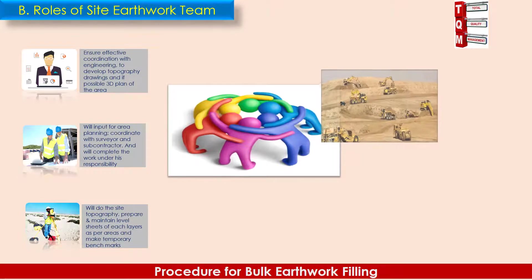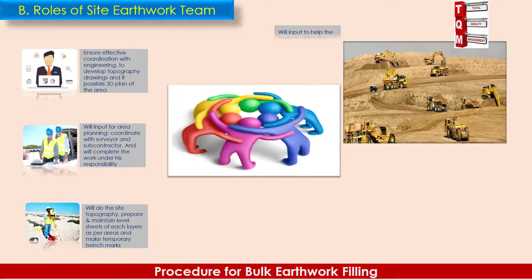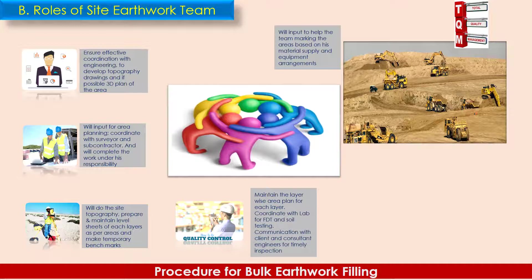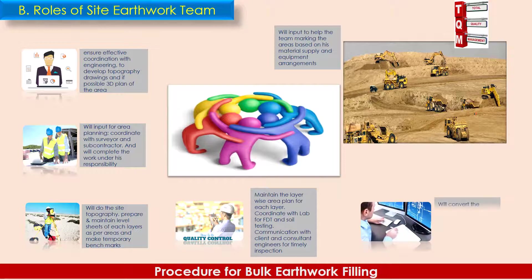The subcontractor will input to help the team mark areas based on his material supply and equipment arrangements. The QC engineer will contribute to area division into smaller portions, keeping in view the RFI requirements, maintain the layer-wise area plan for each layer, coordinate with the lab for FDT and soil testing, and communicate with client and consultant engineers for timely inspection. The design engineer will convert the topography and levels from the surveyor and prepare the layout drawing showing the areas agreed by the team.